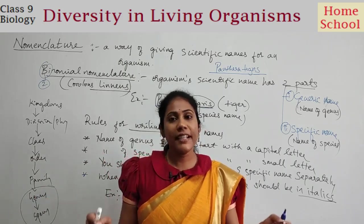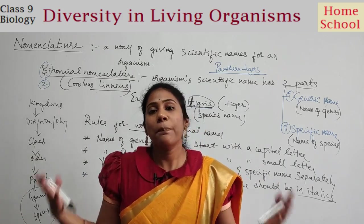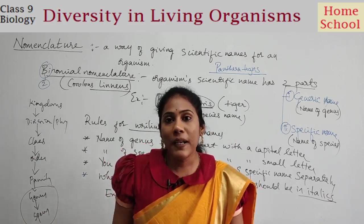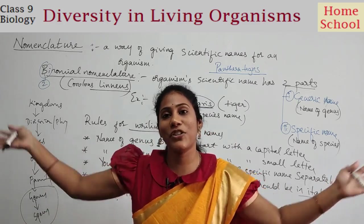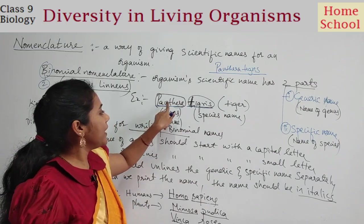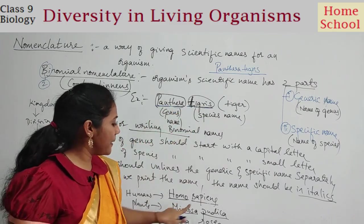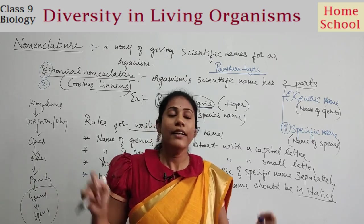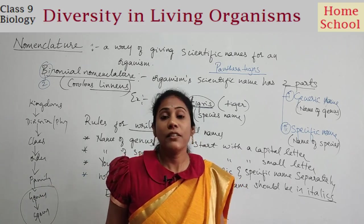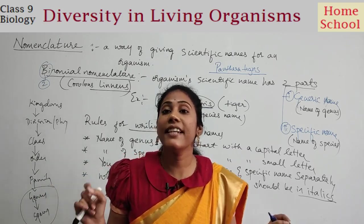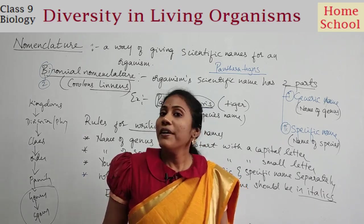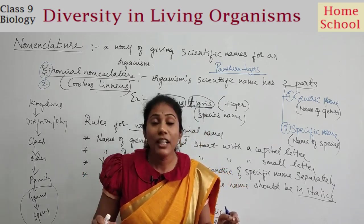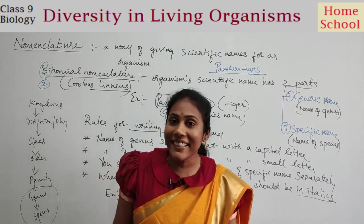You can search the scientific names of various organisms — peacock, lion, monkey, tomato plant, potato plant — you will find different sorts of names. All these names, like Panthera, tigris, Homo, sapiens, are derived from Latin words. So this is all about binomial nomenclature, completing the chapter diversity in living organisms. We will meet up with another chapter. Till then take care, and please like, share, and subscribe to our channel. Thank you so much.